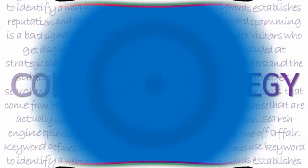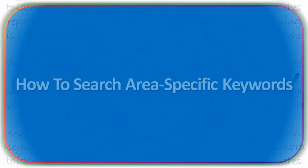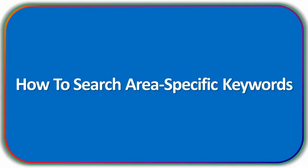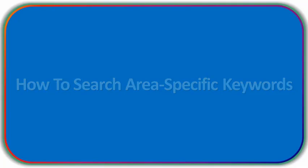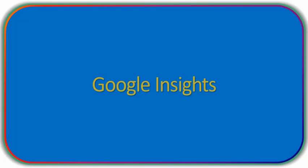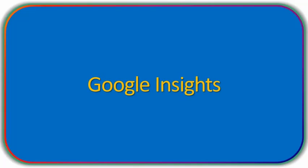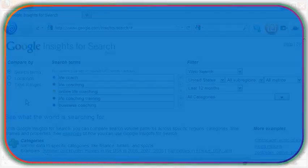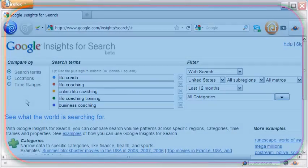A small video about how to look for area-specific keywords. Experienced users already do this, but let me show it with the keyword tools from the last video — first, Google Insights here on the left.